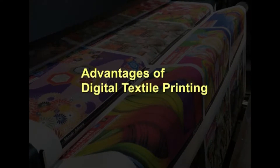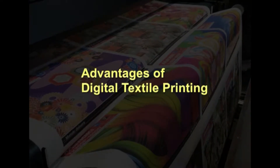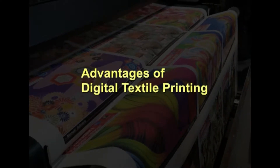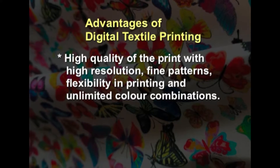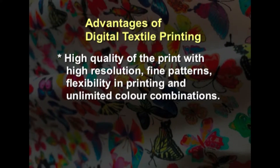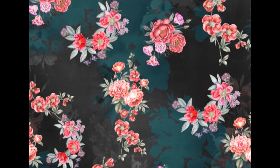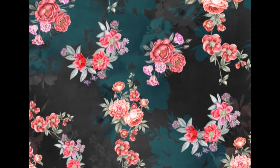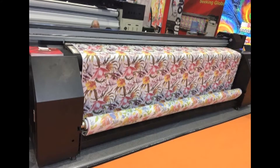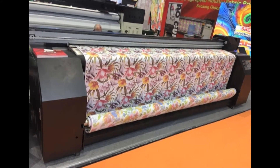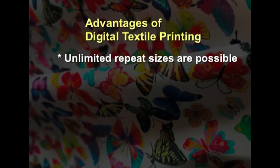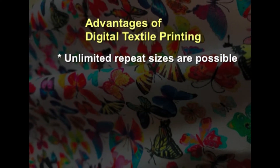Now we will see what are the advantages — why people are opting for it instead of screen printing and rotary screen printing, which are much faster. The digitally printed textiles have high quality print with high resolution, fine patterns, flexibility in printing, and unlimited colour combinations. Very bright prints are possible in digital printing. Unlike rotary screen printing, there is no restriction on the maximum number of colours. Another advantage is that unlimited repeat sizes are possible, such as landscape designs and signages.